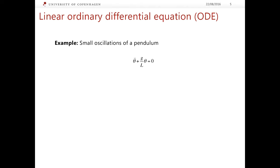Consider an example of such an equation. This example describes small oscillations of a mechanical pendulum. This equation is an equation for the angle the pendulum makes with the vertical. So this angle θ is evolving with time.